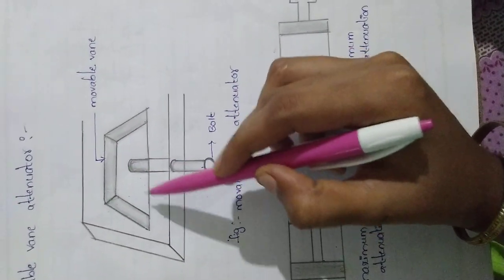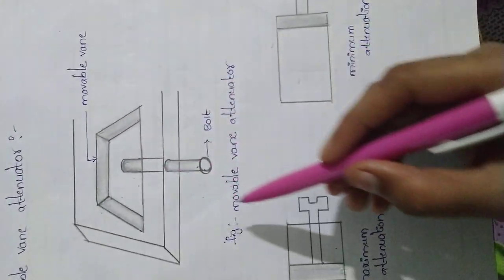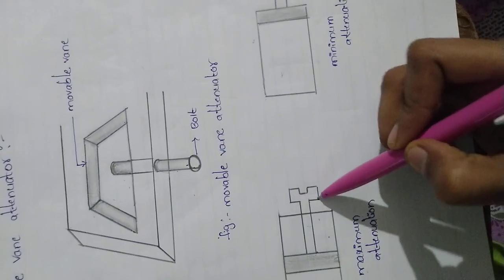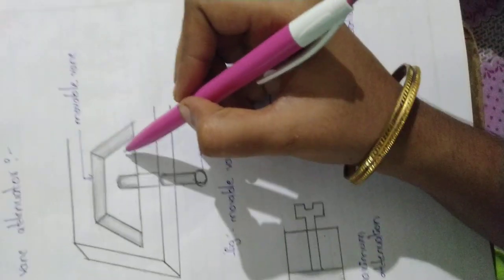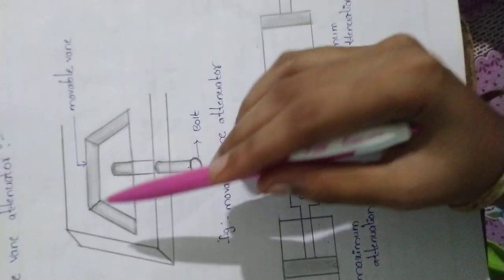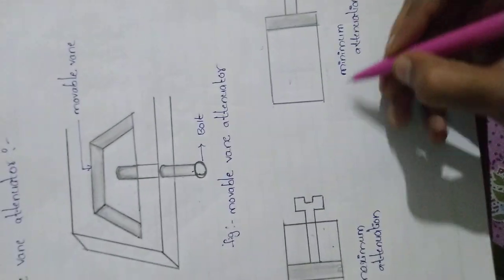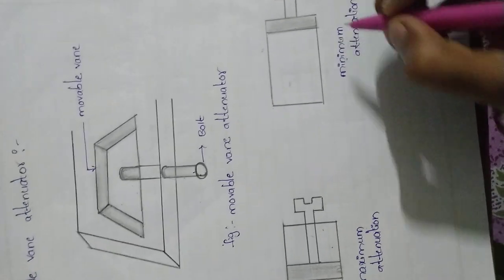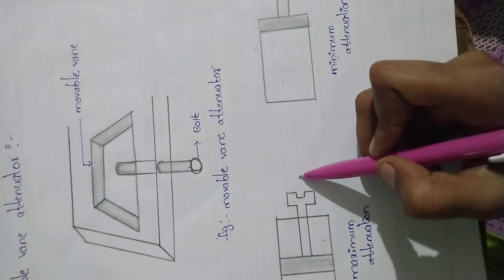If the bolt is rotated completely, then maximum attenuation will occur. If the position of the bolt is at an initial state, then minimum attenuation will occur. This is the representation of the Movable Vane Attenuator.